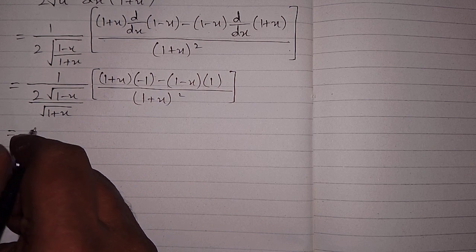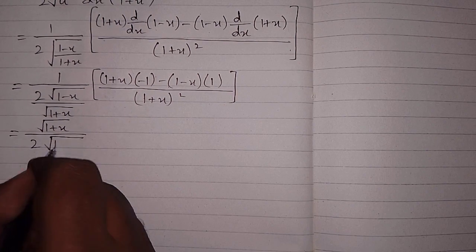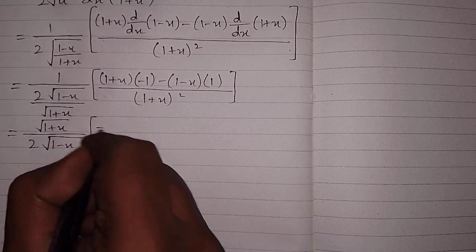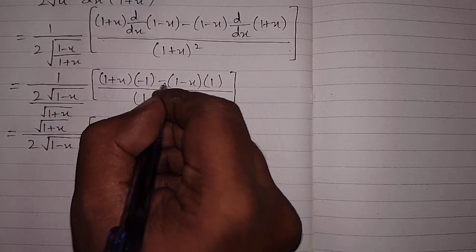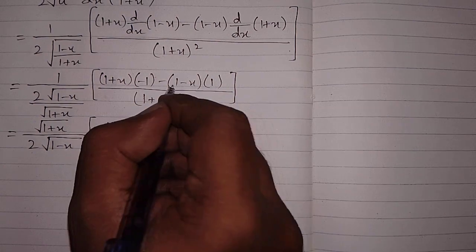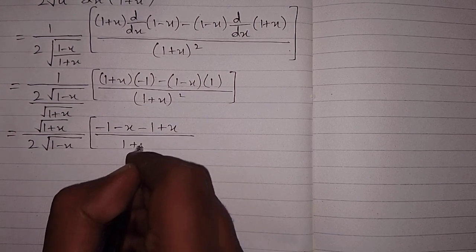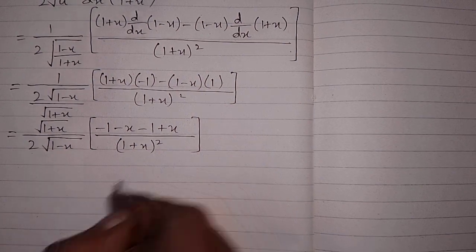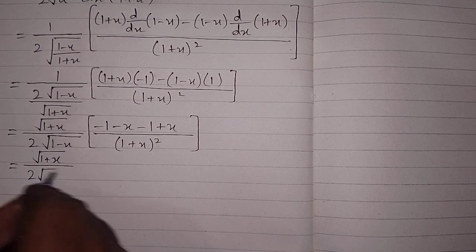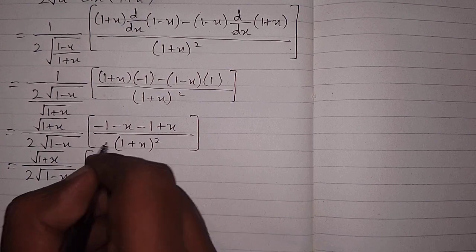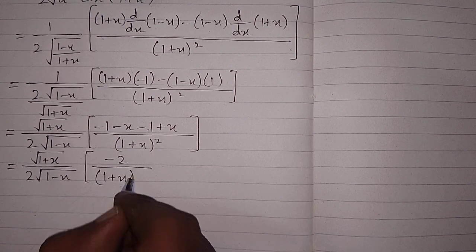Now we convert this fraction into its reciprocal, giving 1·√(1 + x) / (2√(1 - x)). Expanding the numerator: 1·(-1) = -1, x·(-1) = -x, then -1·1 = -1, and -1·(-x) = +x, all over (1 + x)². After simplifying: -x + x = 0 and -1 - 1 = -2, so we have -2 over (1 + x)².